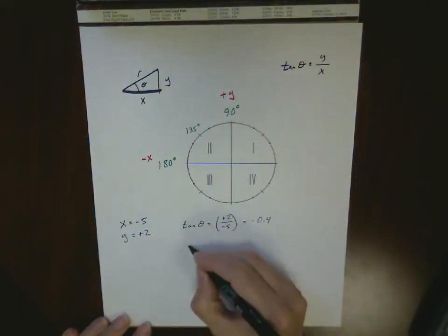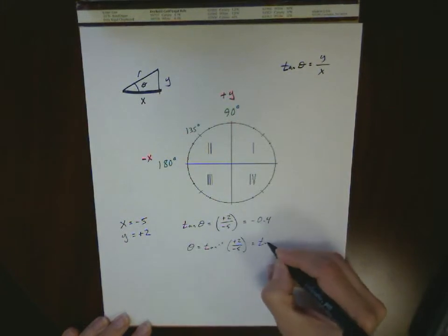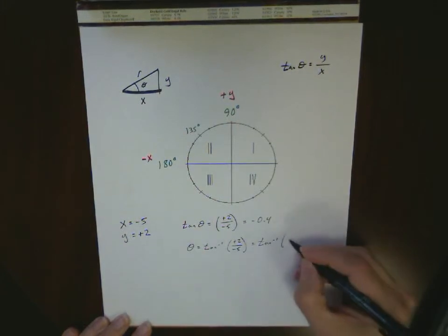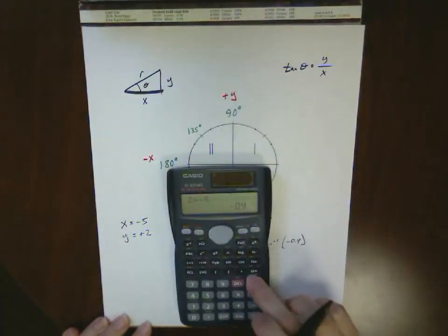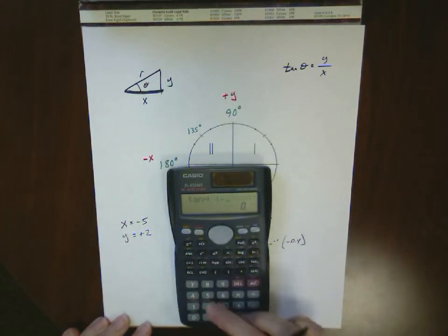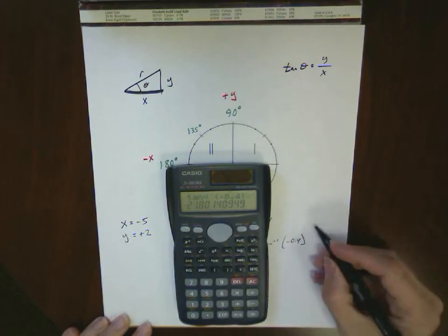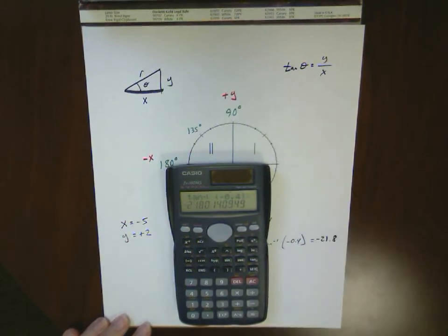Now if I work this in the calculator, theta equals the inverse tangent of +2 over -5, or the inverse tangent of -0.4. My calculator gives me an answer of -21.8 degrees.